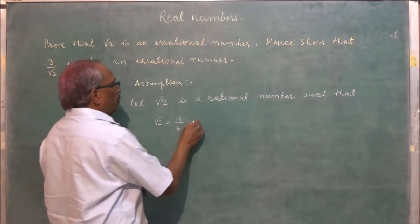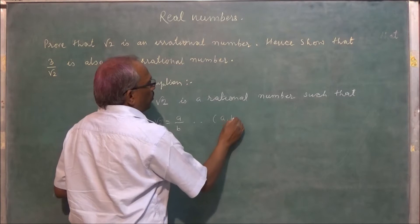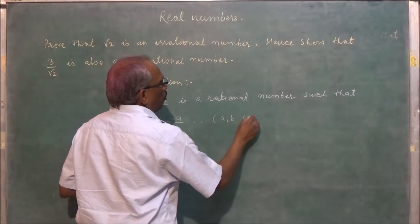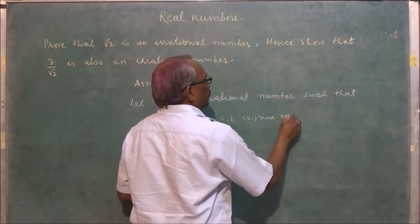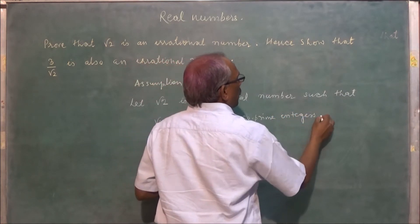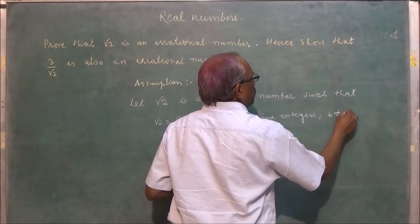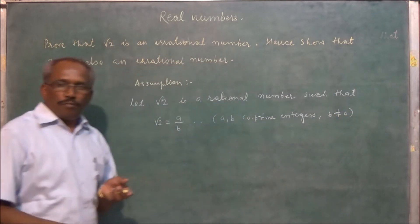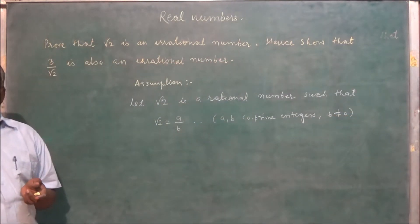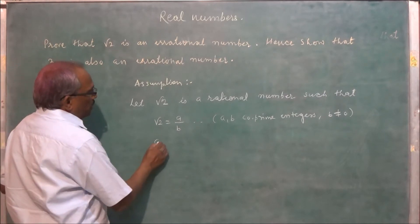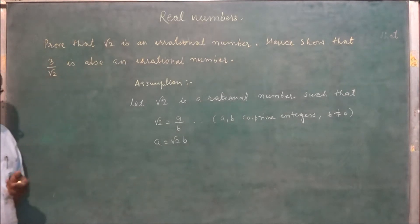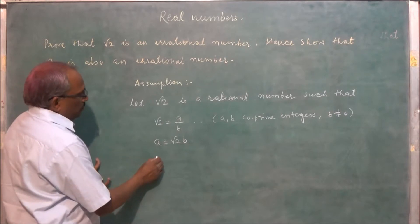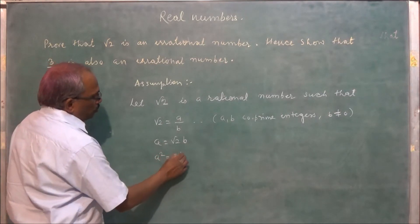So what are a upon b? A and b are co-prime integers, and b is not equal to 0. So this can be written as a is equal to root 2 times b, so a squared is equal to 2b squared.